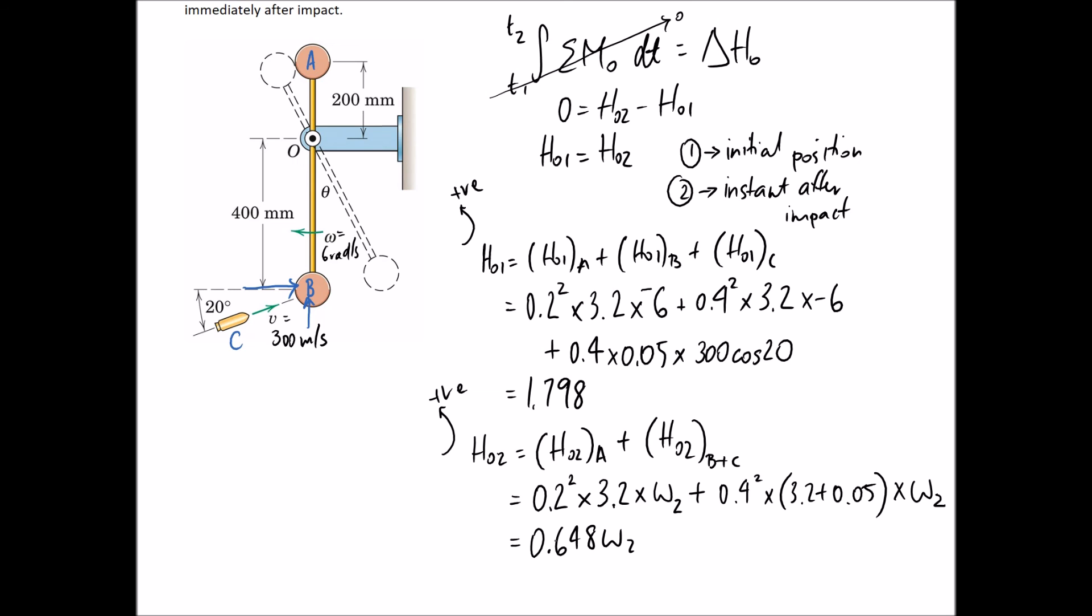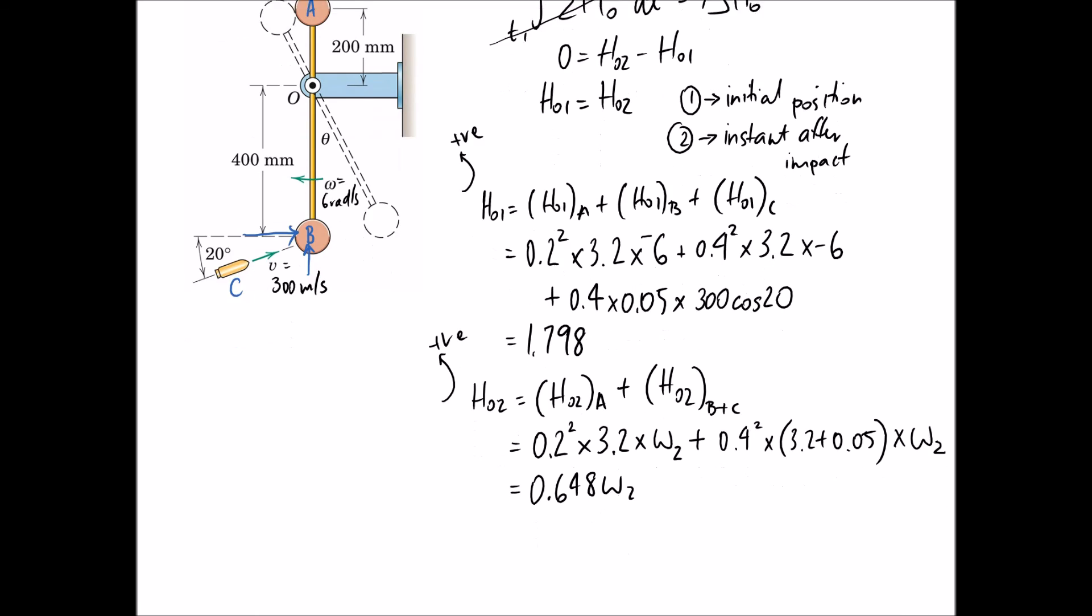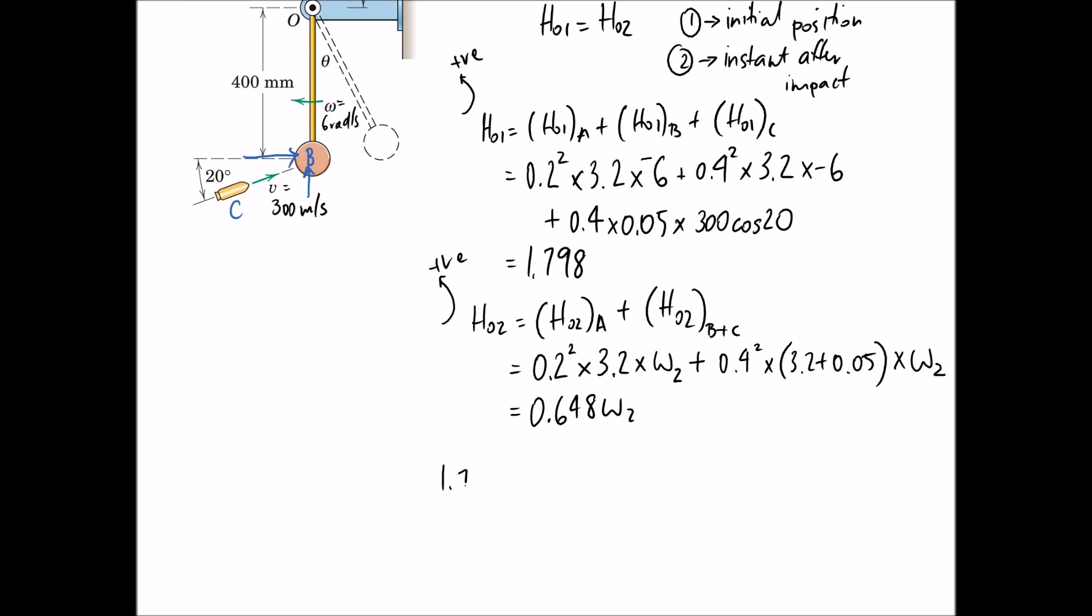The final stage here is just to put both sides of the equation back together. We end up with 1.798 equals 0.648 times omega. It comes out to be 2.77 radians per second. It comes out to be a positive value, so that means it's going to be rotating in the positive direction, the way we assumed it to be positive. That's the final answer to this question. The whole thing is going to be rotating at 2.77 radians per second in the anti-clockwise direction the instant after impact.